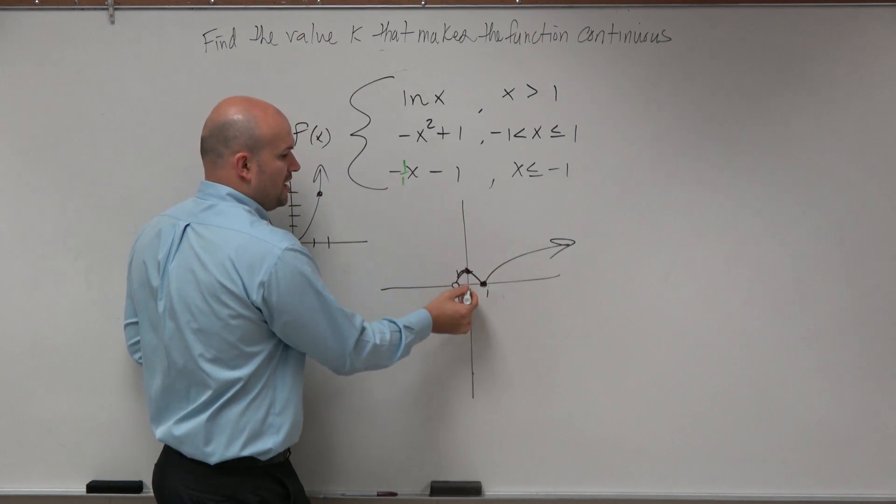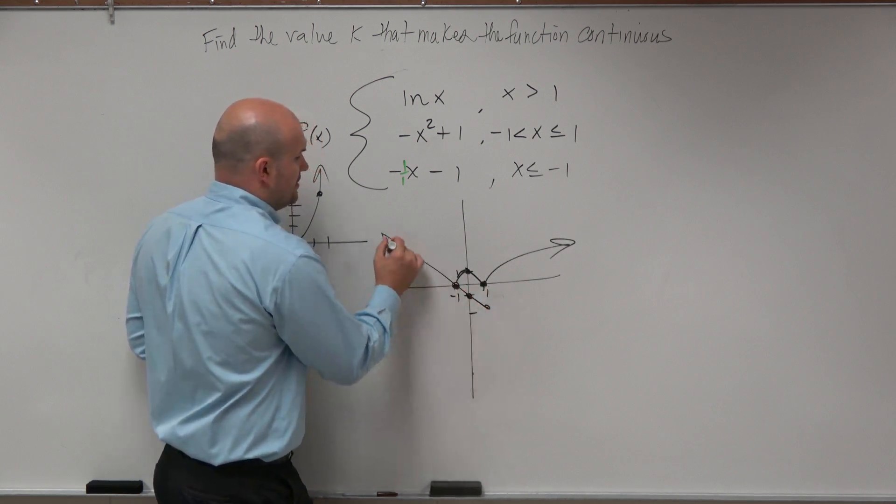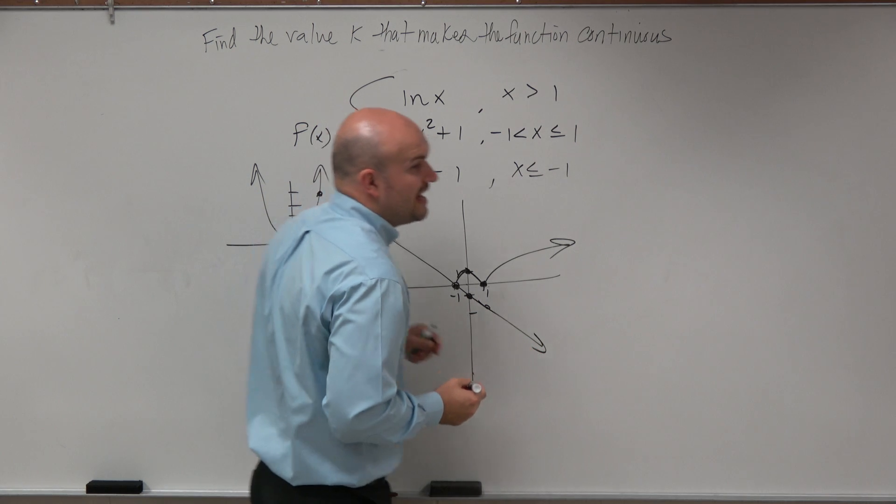Slope is going to be up 1 to the left 1, or to the right 1, down 1. Either way, the graph looks something like that.